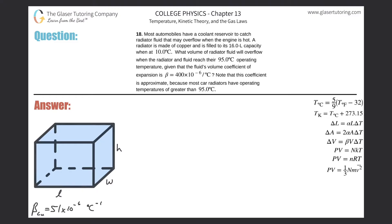Number 18. Most automobiles have a coolant reservoir to catch radiator fluid that may overflow when the engine is hot. A radiator is made of copper and is filled to its 16 liter capacity when at 10 degrees Celsius. What volume of radiator fluid will overflow when the radiator and fluid reach their 95 degrees Celsius operating temperature, given that the fluid's volume coefficient of expansion is 400 times 10 to the minus 6 per Celsius.